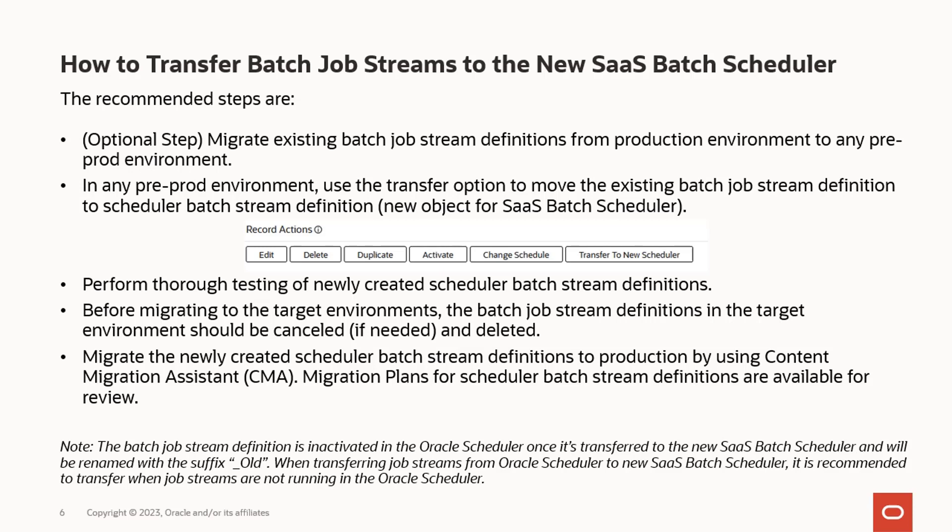The transfer functionality will also create a new Scheduler Batch Stream Definition with pending status. You are required to review the new definition and schedule associated to it, and manually activate it. If you have multiple streams that you want to transfer, we have added a new batch control that will transfer all of your existing batch job stream definitions to the Scheduler Batch Stream Definition. However, we recommend thorough regression testing before performing the same in your production environment. Please make sure that your streams are not running while you perform the transfer, either online or via batch.